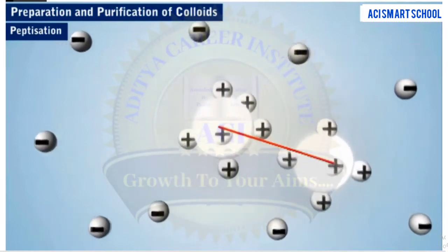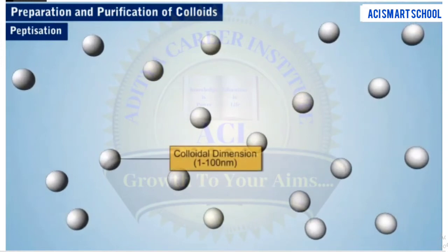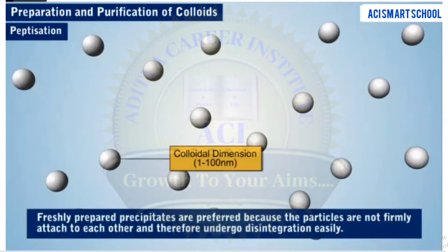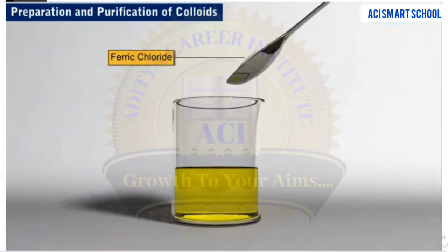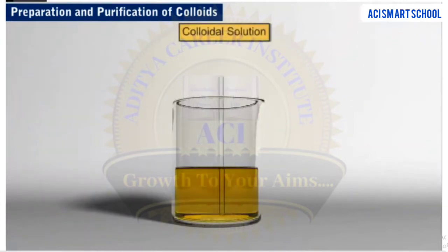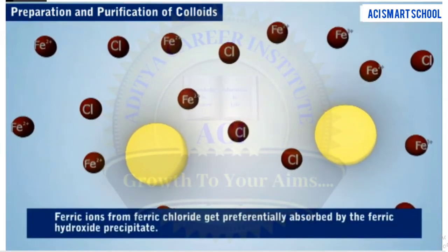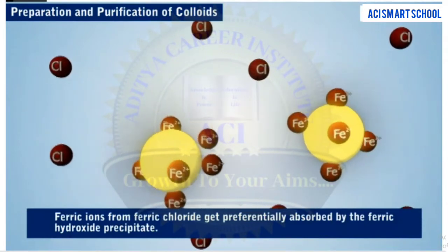These charged species repel one another, and as a result, the precipitate disintegrates into colloidal size particles. It is important to note that freshly prepared precipitates are preferred, because the particles are not firmly attached to each other. For example, the addition of ferric chloride to a freshly prepared precipitate of ferric hydroxide converts it into a colloidal solution, reddish brown in color. Here, the ferric ions from ferric chloride get preferentially absorbed by the ferric hydroxide precipitate.